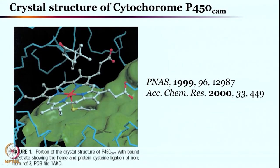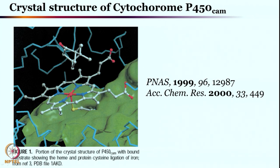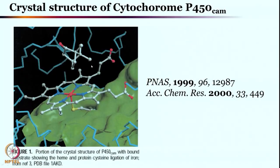Just to recap: this is a porphyrin center. There is a proximal site where sulfur binding occurs, and there is the distal site where oxygen binding will take place. Along with the different protein residues, the organic substrate is hanging in front of the iron-oxygen species — as if it is perfectly positioned to react with the iron-oxygen species that will be generated at this site.